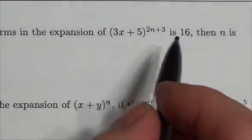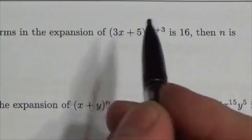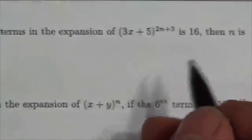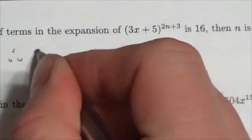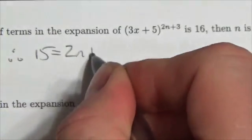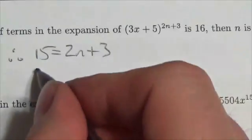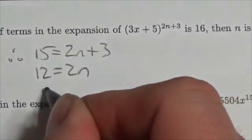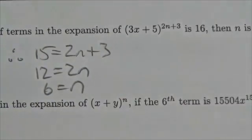So if there are 16 terms here, this exponent must have been 15. Therefore, 15 equals 2n plus 3. Subtract the 3: 12 equals 2n, so n equals 6.